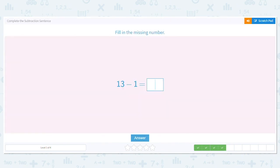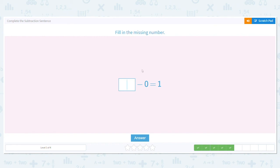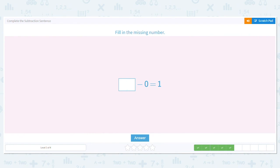All right, 13 minus 1. You can do this. 13 take away 1 equals 12. How about here? Blank minus 0 equals 1. I'm missing that first number. So what can I do? I can add 1 plus 0 equals 1. So I take that 1 and I put it in the box. 1 minus 0 equals 1.